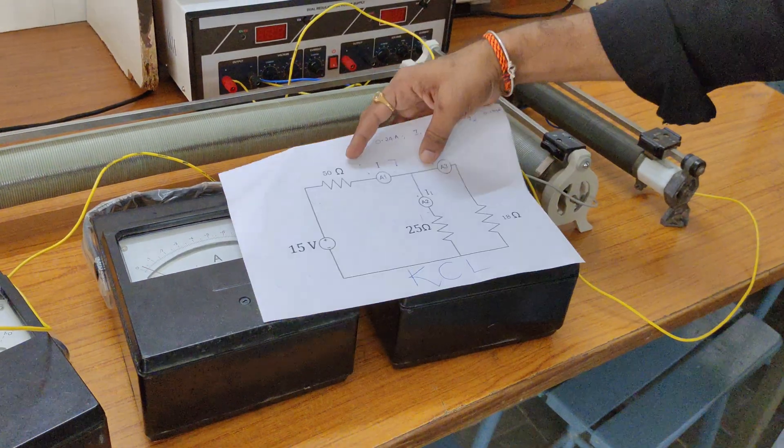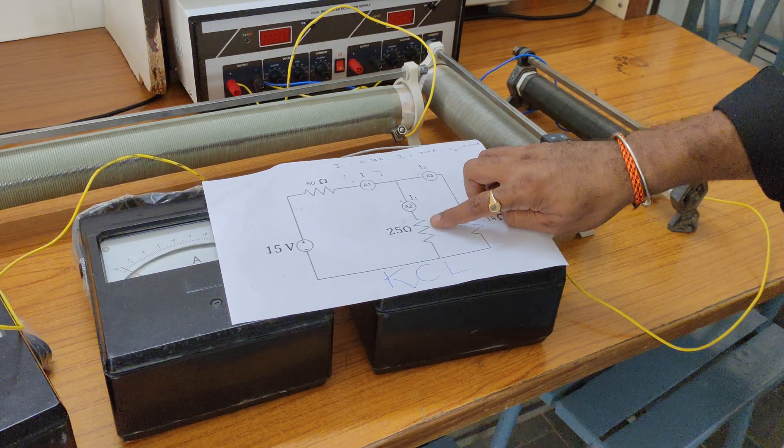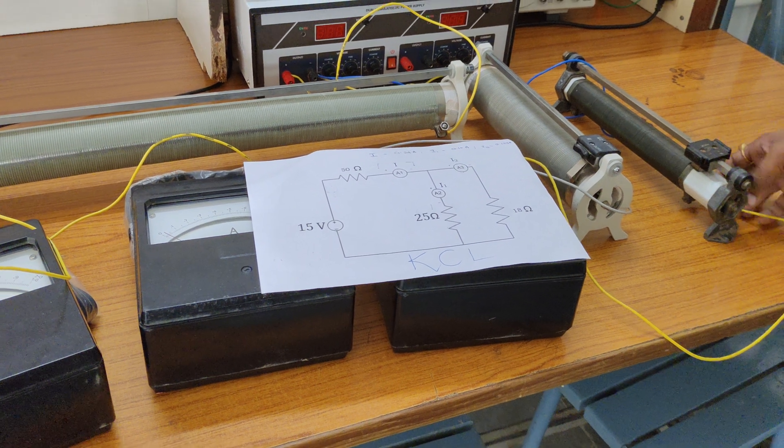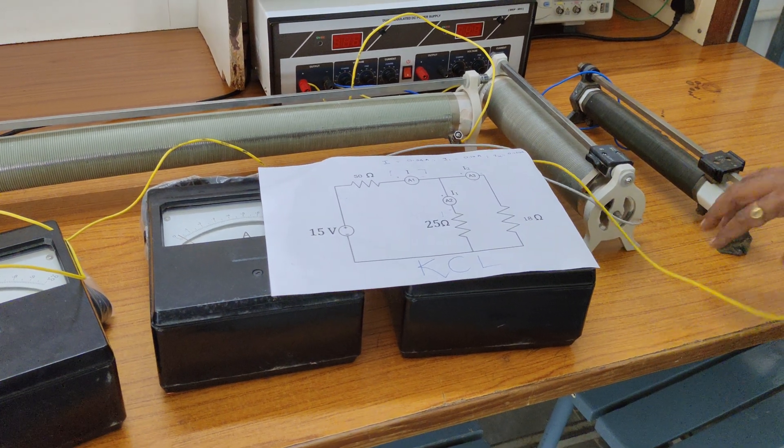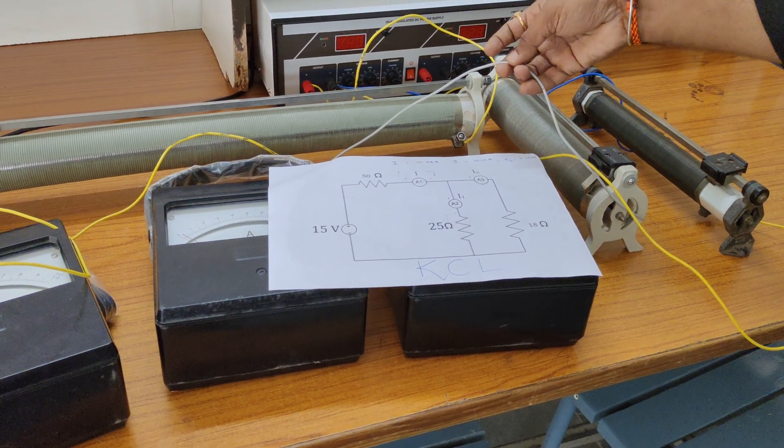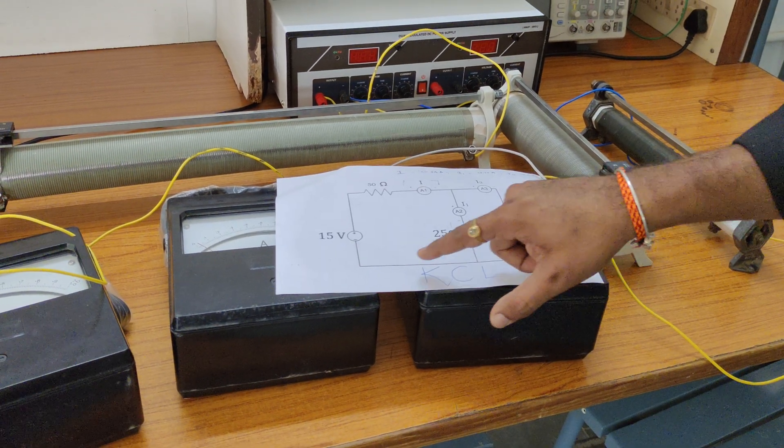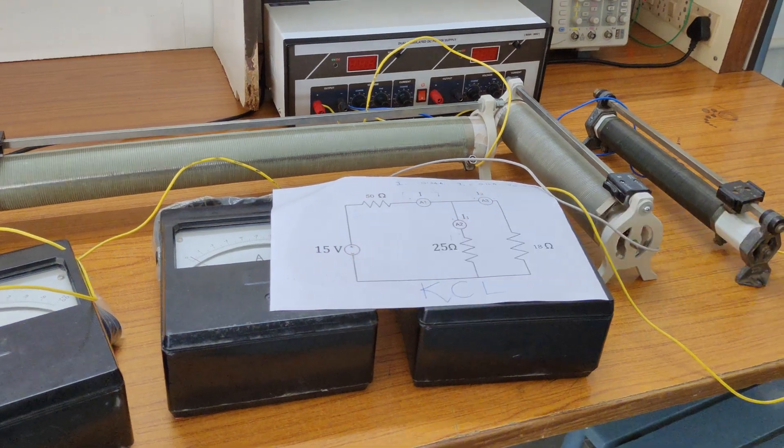Now observe the next part - this ammeter's other end is connected to 25 ohms, and this ammeter's other end is connected to 18 ohms. The other end of 18 ohms and 25 ohms is connected directly to RPS negative supply.